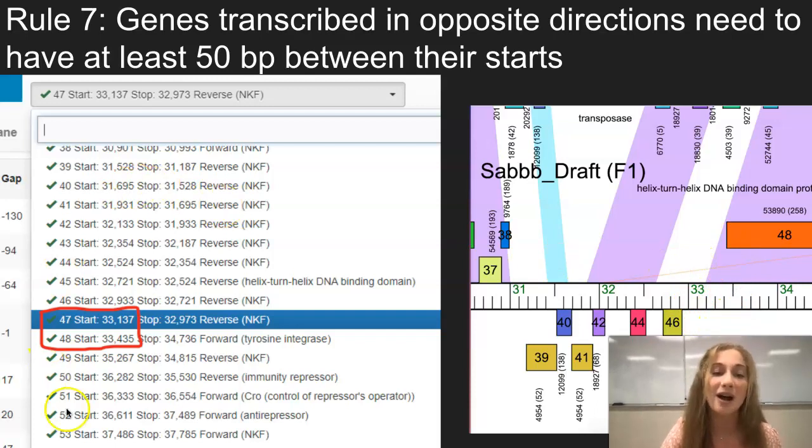And if we look at this pecan, it is the same exact place, this 47 to 48 where it switches from reverse to forward, there is indeed a 50 base pair gap between the two genes right here.